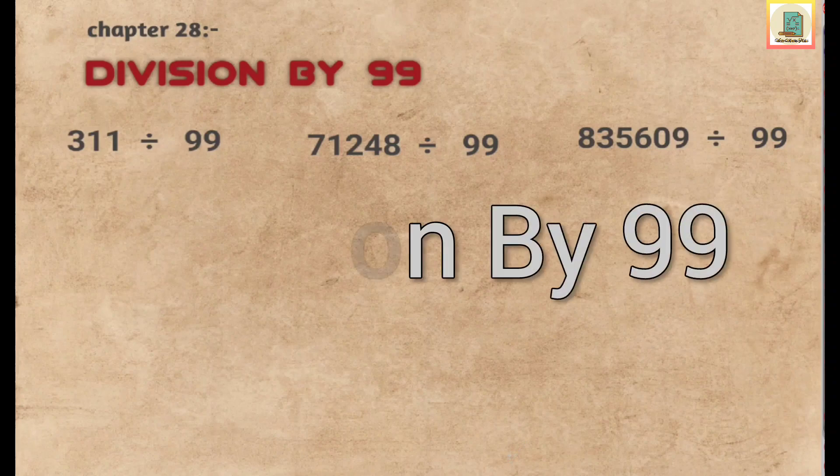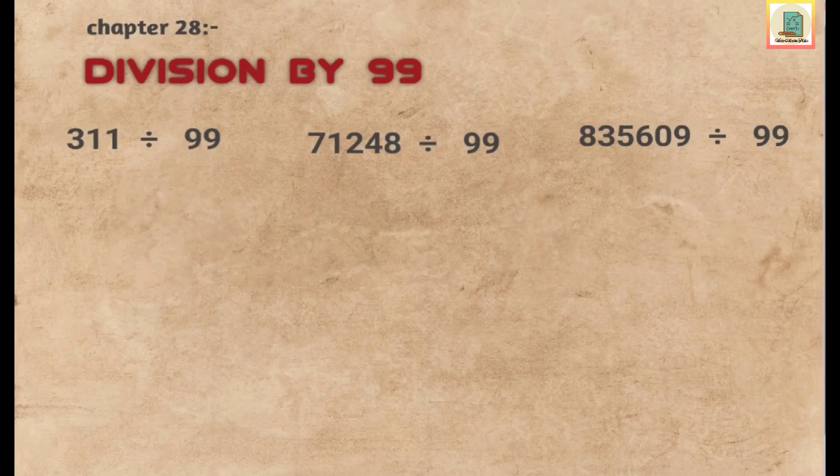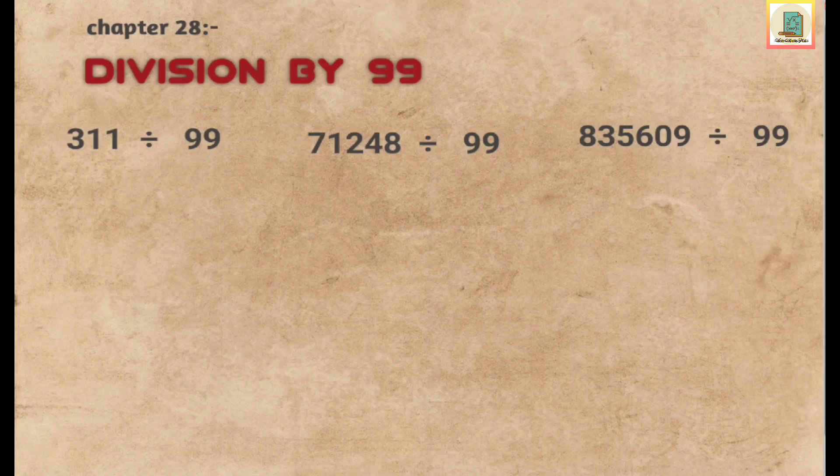Today's video is about division by 99. Let's understand the first question: 311 divided by 99. We will write 311 here and make a format where we'll write the divisor over here. The divisor is 99, so it has two digits in it. We will leave two digits from the right and put a partition.